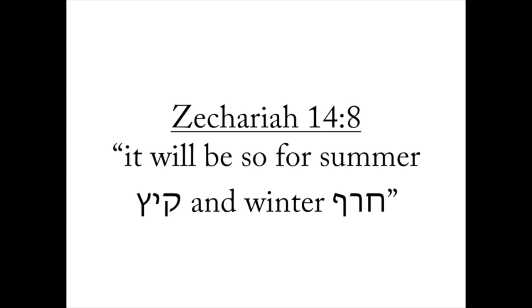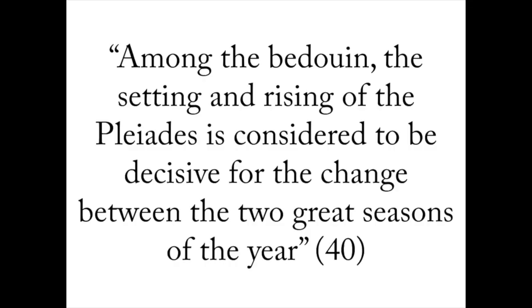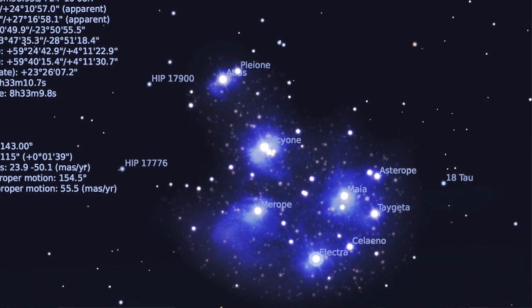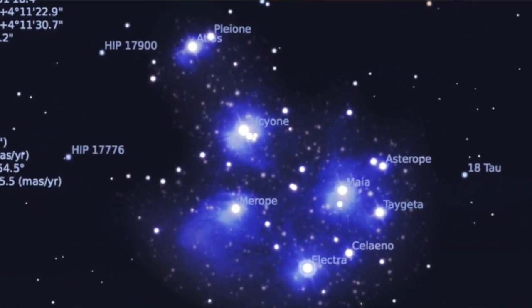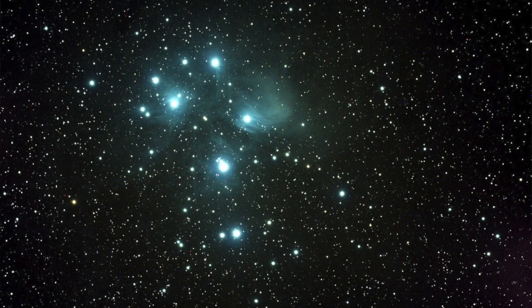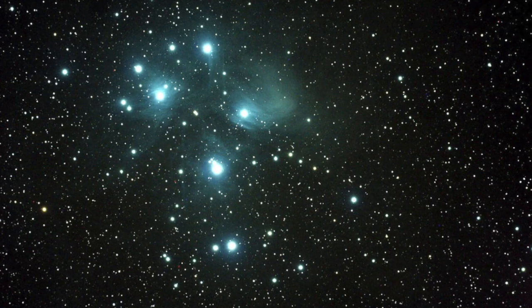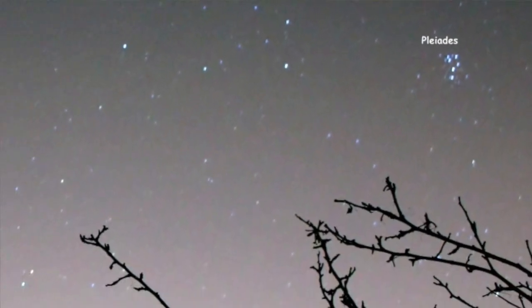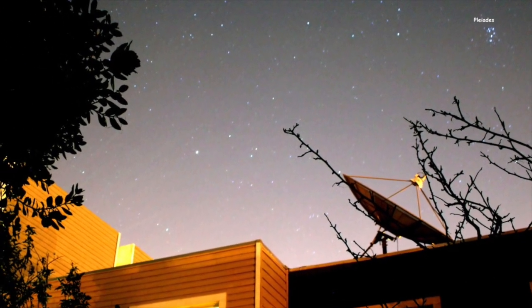For example, in Zechariah 14:8, it mentions it will be so for summer, kayats, and winter, choref — it only mentions two seasons, not the other four. And there are a number of other examples where only kayats or choref are mentioned without any other explanation. This leads to a question: when did the winter begin and end, and when did the summer begin and end? And Dahmen recorded a fascinating insight from the local Bedouin. He writes: among the Bedouin, the setting and rising of the Pleiades is considered to be decisive for the change between the two great seasons of the year. The Pleiades is a formation of about seven stars, known as the Seven Sisters, and it's one of the brightest spots in the night sky. Interestingly, the Pleiades is actually mentioned in the Bible itself in three different cases: Amos 5:8, Job 9:9, and Job 38:31.